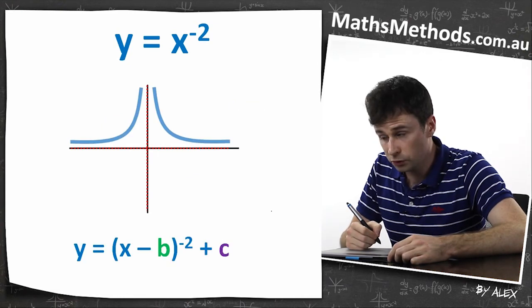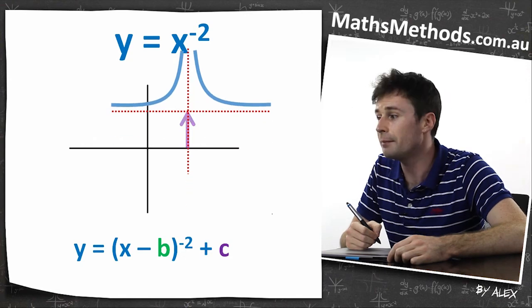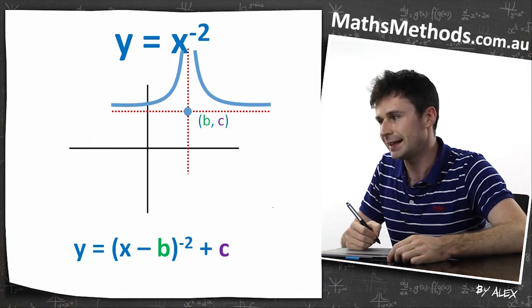Same deal with this bad boy. I wanted to move it b, so that'd be a b amount, and that would be a c amount. So whatever it is, that point would be (b, c).